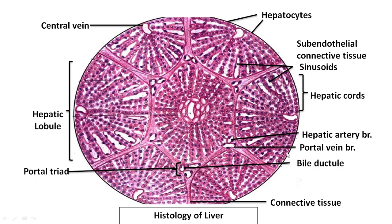The hepatic artery gives 20 percent of the blood supply to the liver, which contains oxygen-rich blood transferred to the liver for metabolic purposes. The portal vein, which drains the gut, carries nutrition-rich blood to the liver.